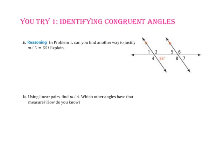Pause the video and do You Try number 1. In Example 1, we said that angle 5 was 55 degrees because it was an alternate interior angle to the 55-degree angle. They want to know if we can find another way to justify that. Since angle 7 is corresponding to the 55-degree angle, and angle 5 is vertical to angle 7, we know that angle 5 is 55 degrees.